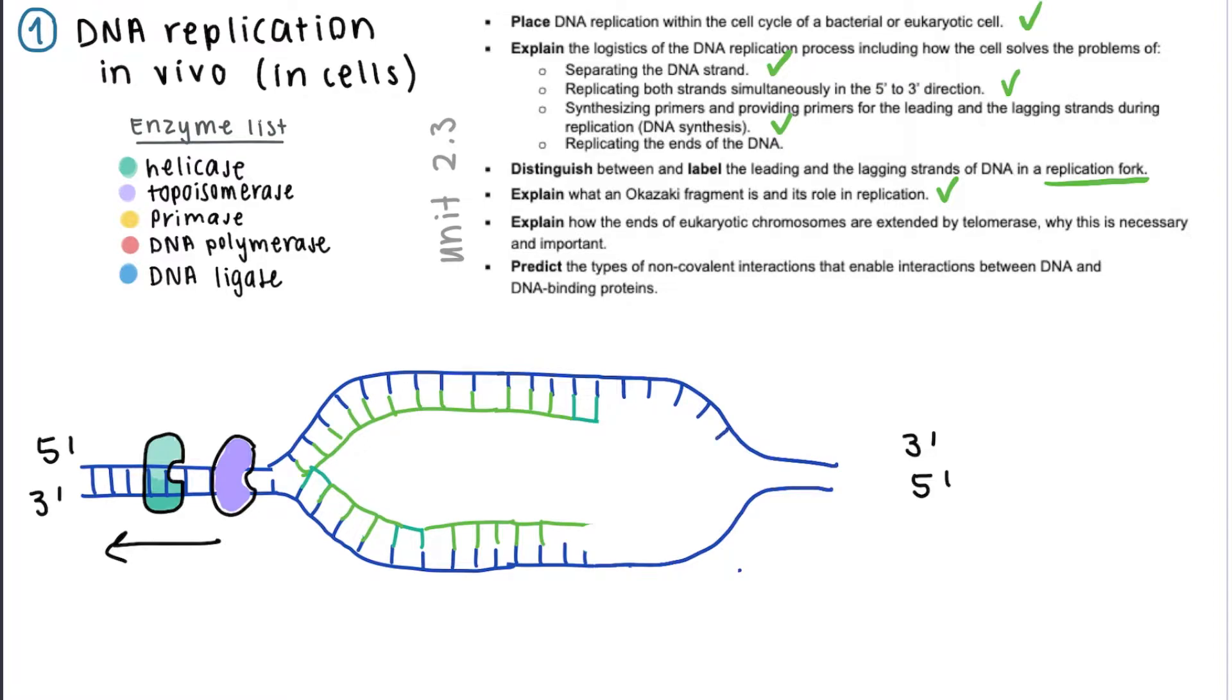So there will be a helicase and a topoisomerase on the right side of the origin, and this whole process will happen for this side as well. This means that for every DNA replication event there are actually two replication forks.